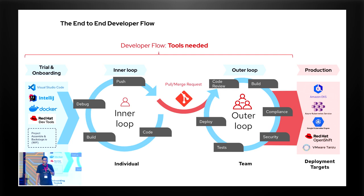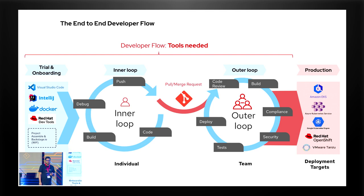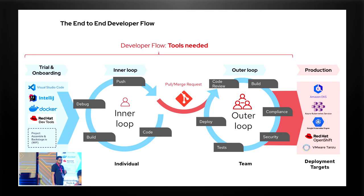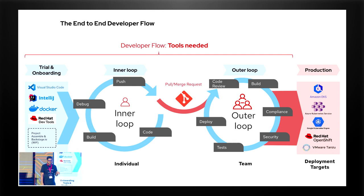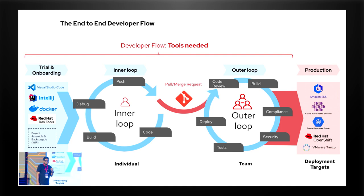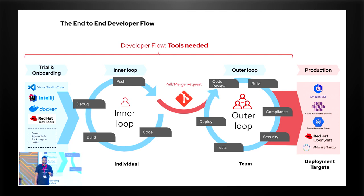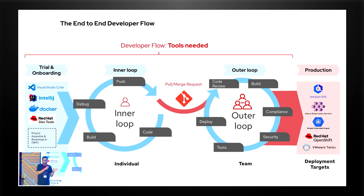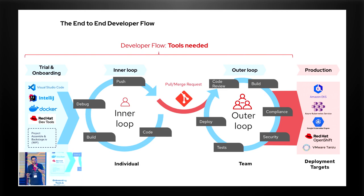The next step for a developer is how to develop their code from the workspace — that should be your editor. It can be any editor you prefer: IntelliJ, VS Code. This is known as the inner loop. By inner loop I mean you write your code, you build it, you debug it, and once done you push that code. As soon as you push code — whether via a merge request or otherwise — it moves to the outer loop. In the outer loop you do code review, compliance, security, and once that cycle is complete you deploy directly to production. Production can be any OpenShift instance on bare metal, AWS, GCP, or Azure.